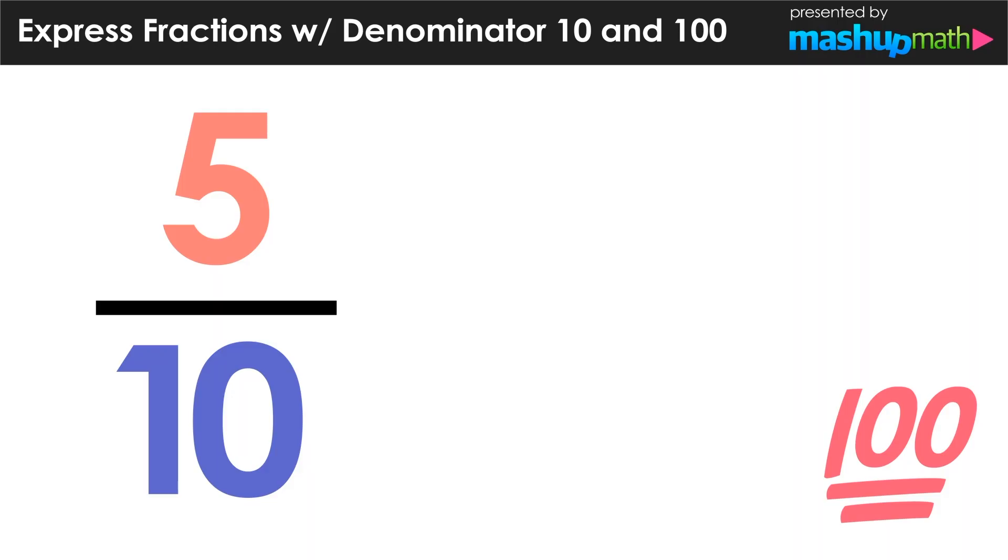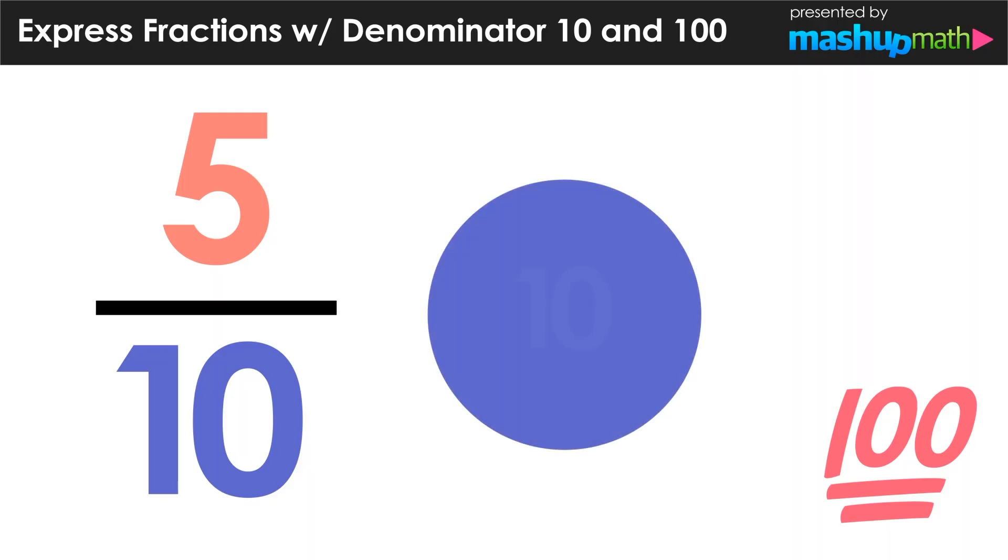So let's start by looking at the fraction 5 over 10. We know that the whole is 10, which we can represent with this circle, and the part 5 is 1 half of it. So 5 over 10 is equal to 1 half, because you would need two 5s to equal 10, because 5 plus 5 equals 10.